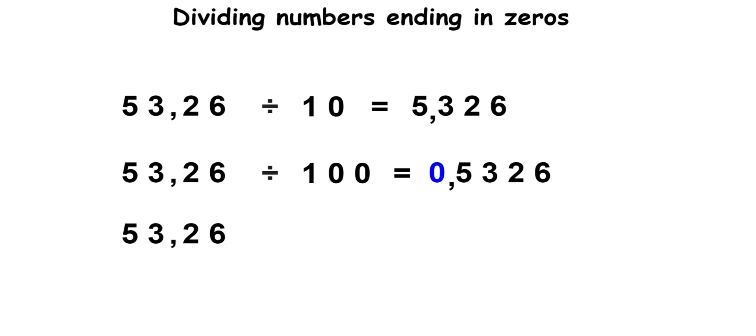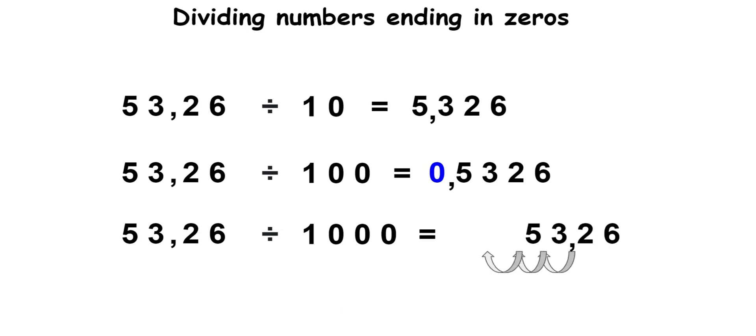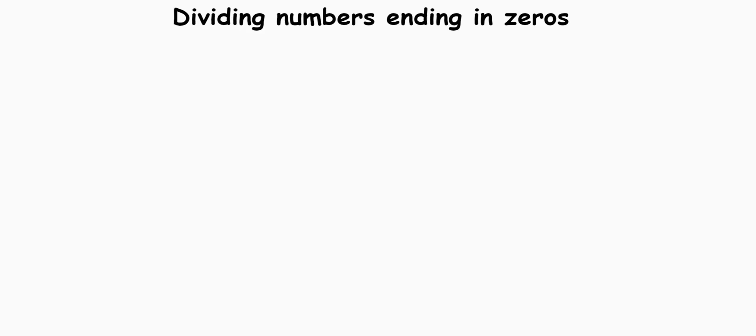And if you take the same number and divide it by 1,000, you would be making your number 1,000 times smaller, which means the decimal would need to be moved three spaces to the left. This is because every single digit has become 1,000 times less valuable. So, now that we understand what happens when we divide numbers by 10, 100, or 1,000, let's divide numbers ending in zeros.